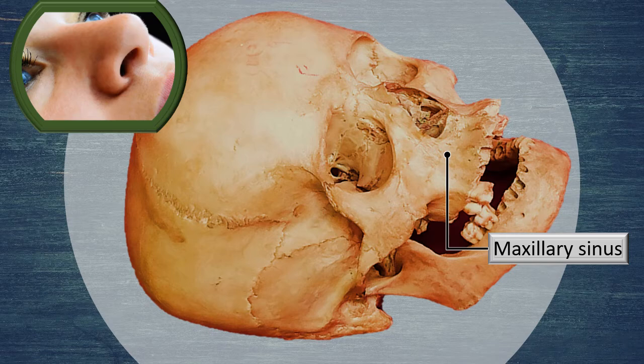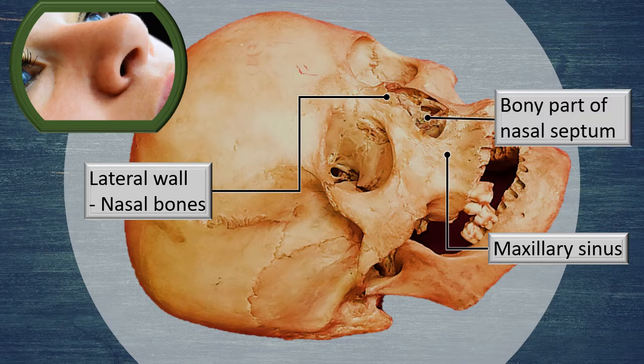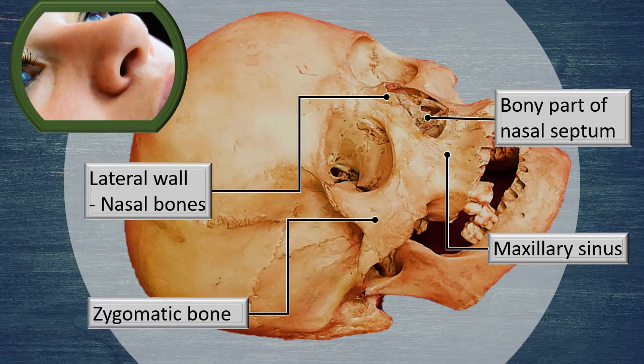Immediately above the oral cavity and inferolateral to the nasal cavity is the maxillary sinus. The nasal bones form the upper part of the lateral wall. Although not a major contributor to the external nose, the presence of the nasal septum is important: it is the nasal septum that causes the forward protrusion of the nose. Its anchorage to the bony part of the nasal septum is particularly to be noted. The zygomatic bone corresponds to the prominence seen in the full facial view.